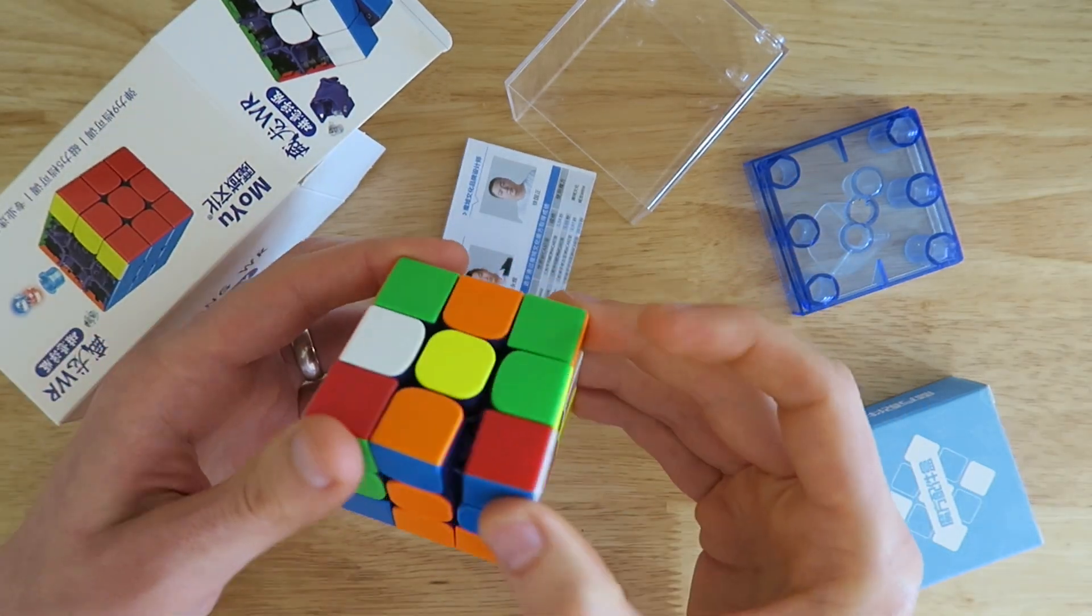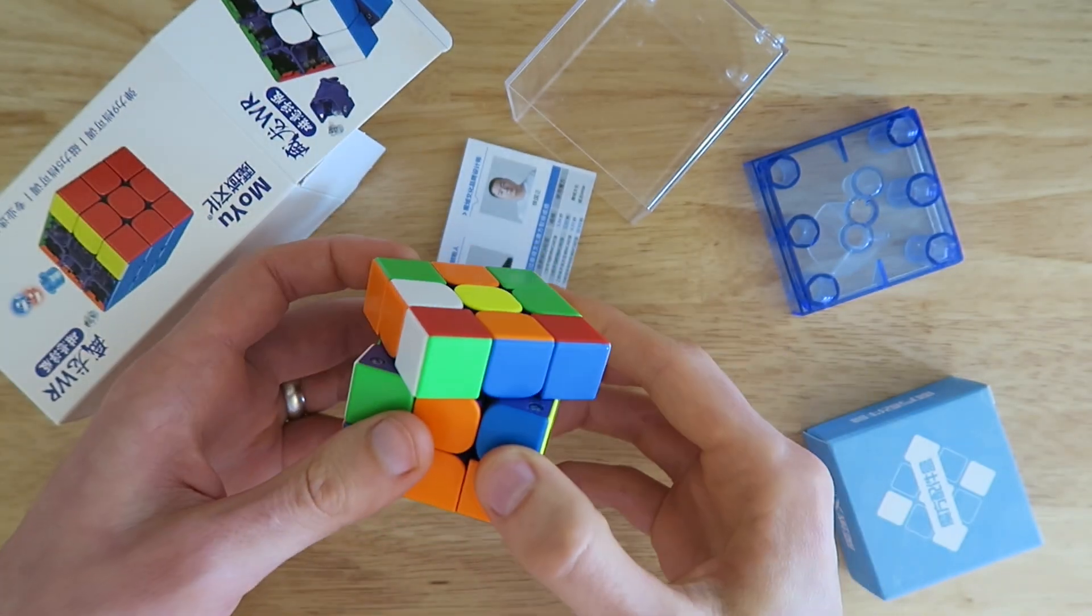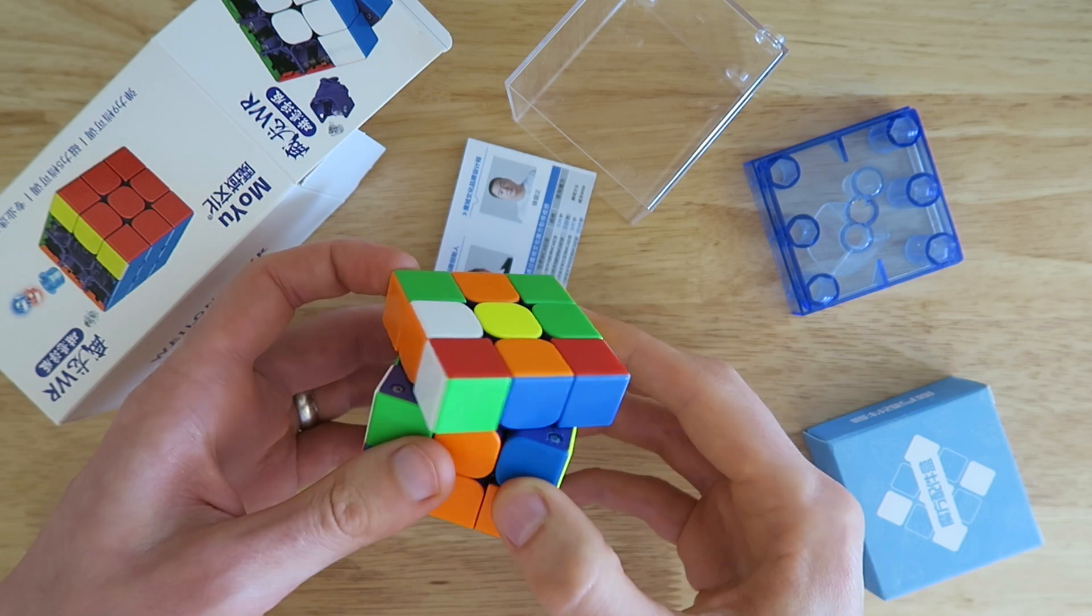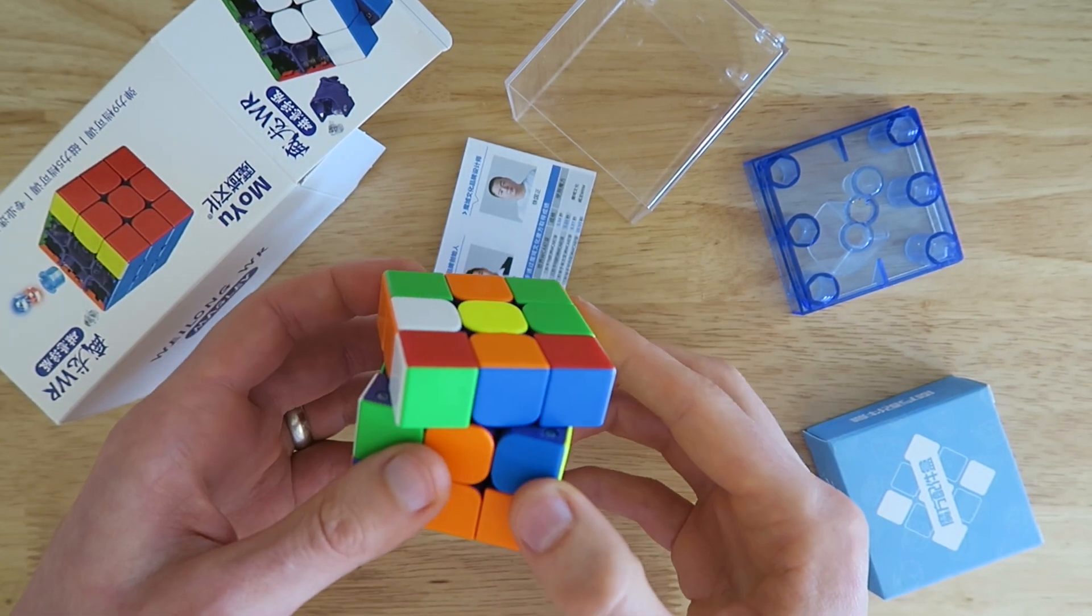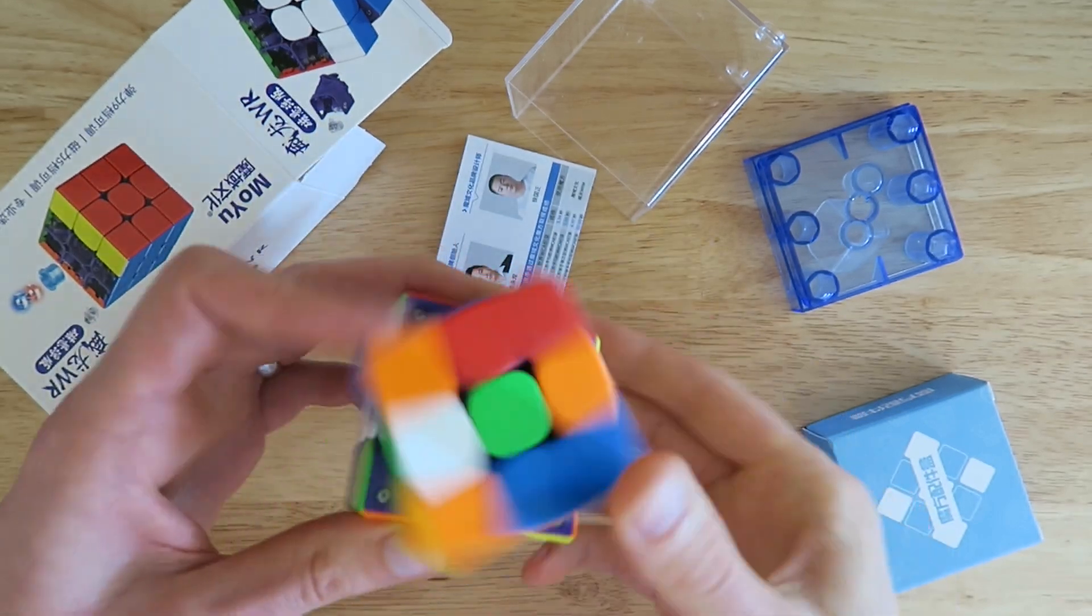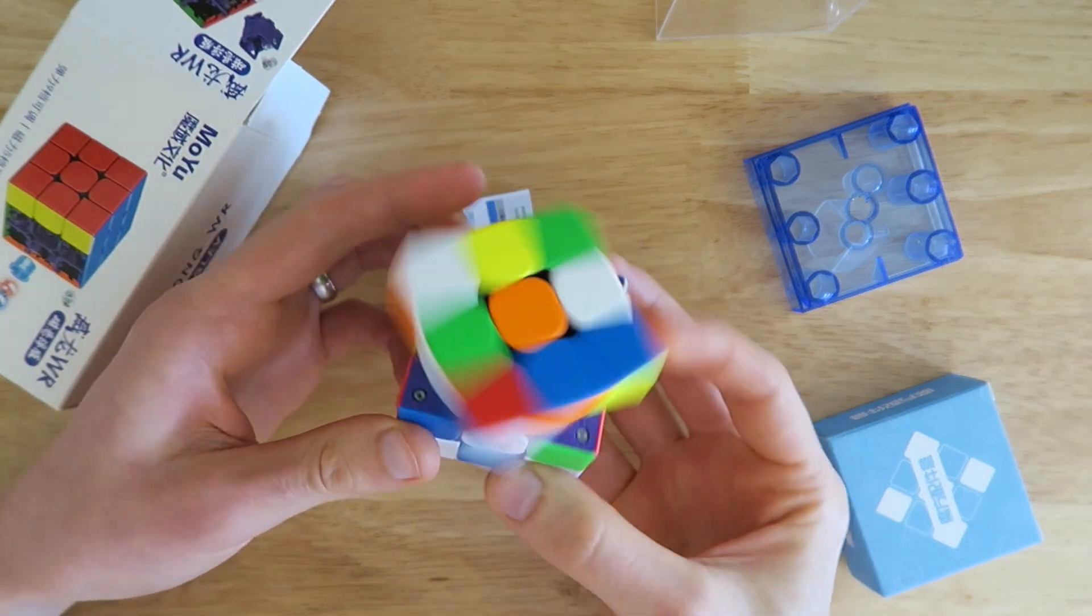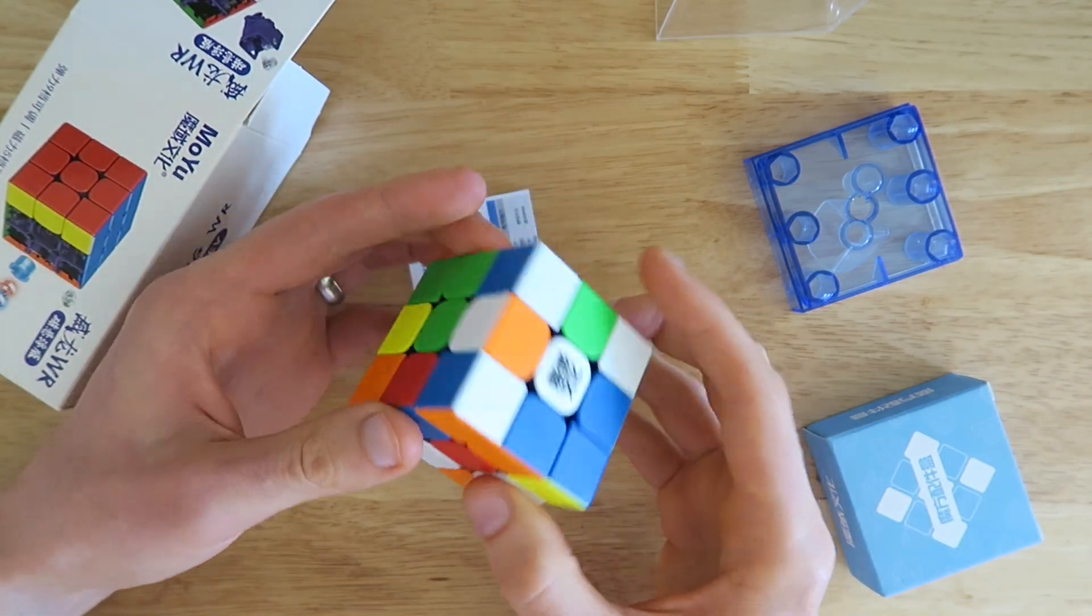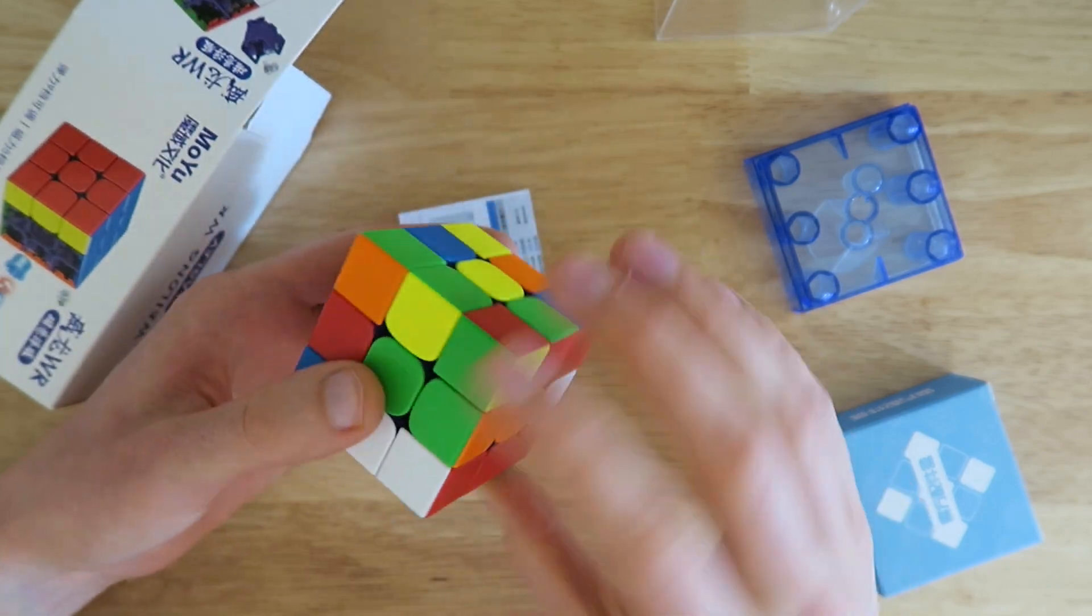It's quite snappy. I'm not sure if that has anything to do with the maglev, but we have really nice corner cutting there. Wow. Okay. This is really nice. It doesn't really feel like a Moyu Wei Long like the GTS or the GTS version 2, but it has its own sort of identity and feel to it.